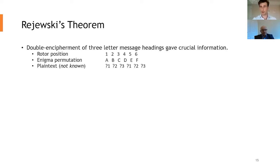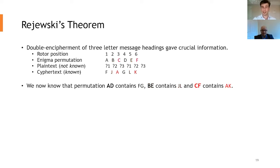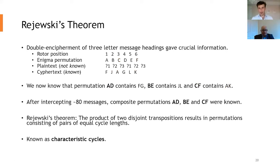Now we don't know the plaintext, but we do know there's a relation between them. We do know the ciphertext because you can intercept it. And what you can do is, if you combine permutations, so if you have permutation A, D, which is known as a composite permutation, so if you essentially mash them together, we know there's a relation with F and G. We know that it contains F and G. Equally, B and E contains the letters J and L, and C and F contains the letters A and K.